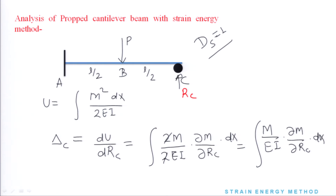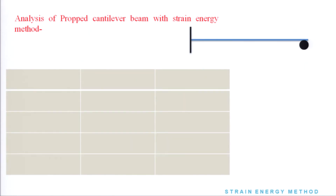Toh C ke liye, hum saare sections ke liye dekhenge. Hamare paas do alag individual sections hain: CB and BA. CB aur BA mein, hum RC ka effect dekhenge with respect to deflection, hum is equation mein rakhenge. M ki value nikalenge, del M upon del RC ki value nikalenge, aur unka summation kar denge. Iske liye simple ek table banaate hain.